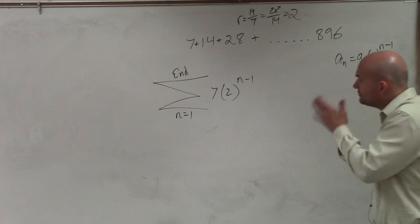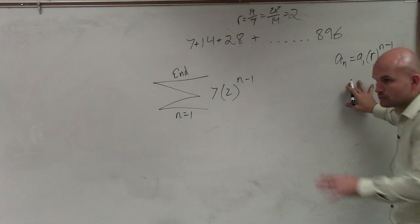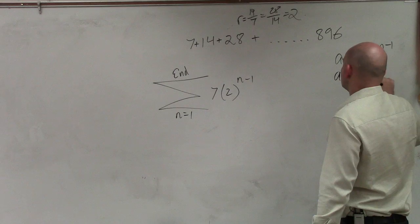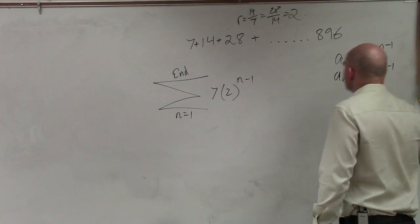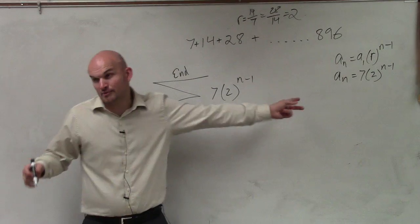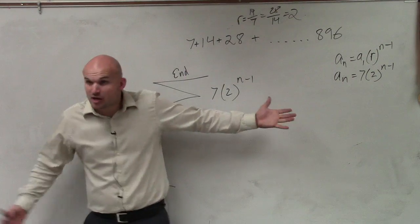So if you guys remember, when I have this formula, when I have this rule, and let's say a sub n equals 7 times 2 raised to the n minus 1. Brittany, if I want to find the 11th term, what would I do with that formula?